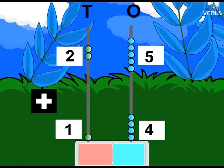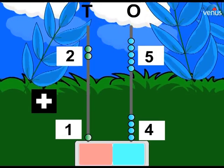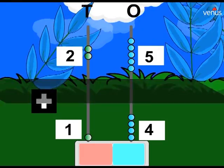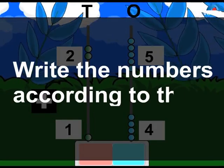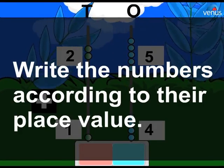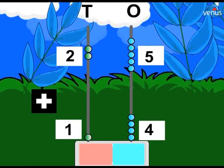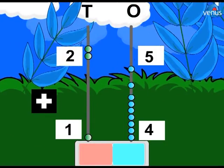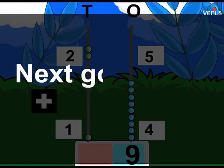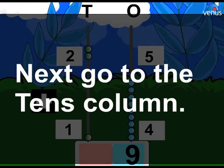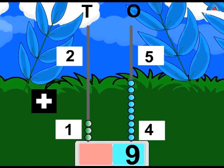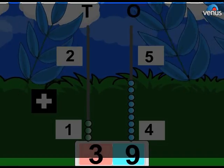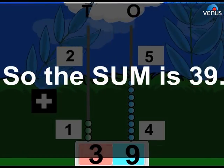Addition the regular way. Example 1: Add 25 and 14. Step 1: Write the numbers according to their place value. Step 2: Start with the ones column. Step 3: Next go to the tens column. So the sum is 39.